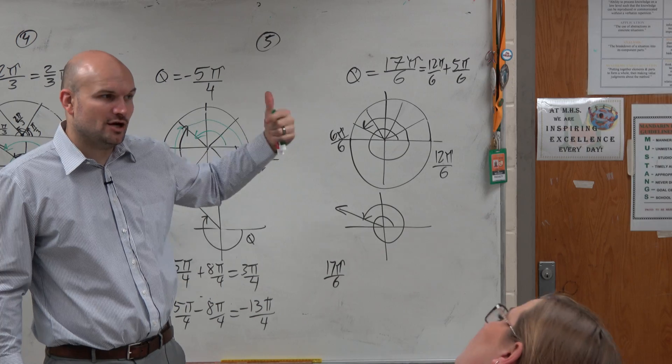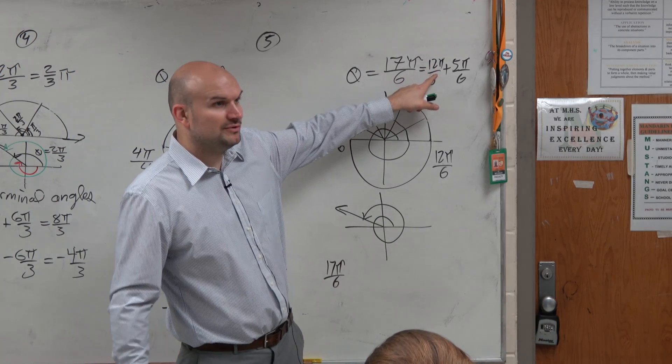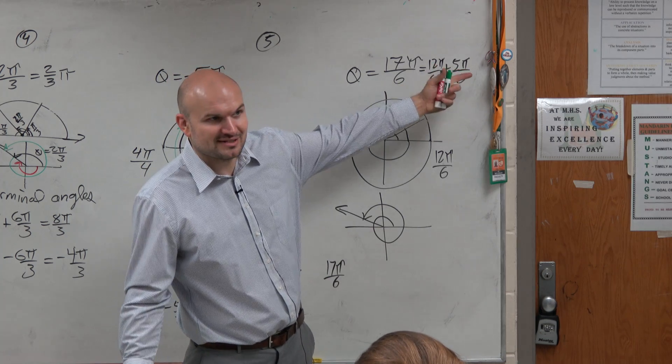That's not going to help me get to a negative number. If you subtract 12π, what are you left over with? 5π over 6, right? Because I broke it up.